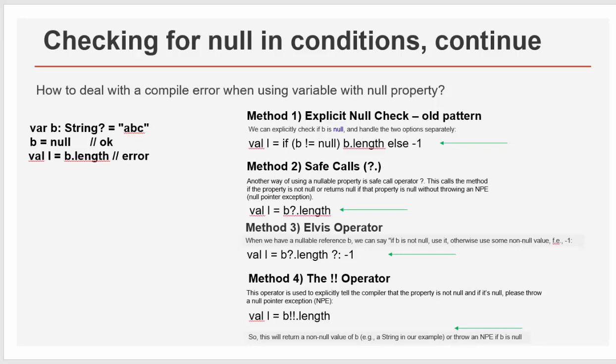But method two, three, and four are Kotlin versions, new, totally new for you. The first one has a name safe calls. Question mark inserted between variable and property. So another way of using a nullable property is safe call operator question mark. This calls the method if the property is not null or return null if the property is null without throwing an NPE. What is NPE? Null pointer exception. So you see how useful this right now? Android Studio will provide you some help when you run the code and you will have a choice to choose safe calls or another way.